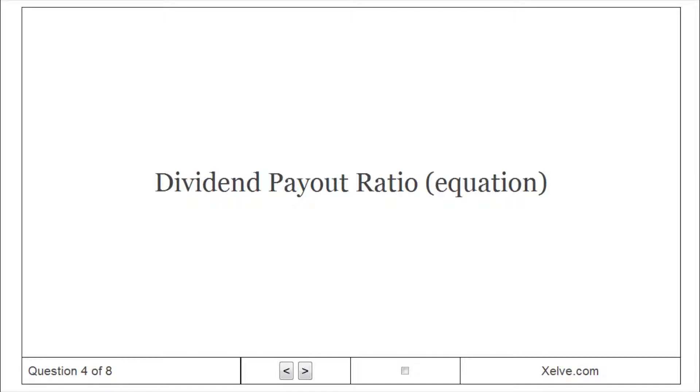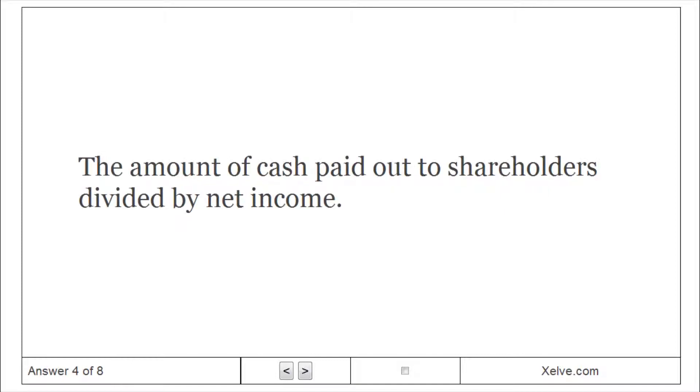Dividend Payout Ratio. The amount of cash paid out to shareholders divided by net income.